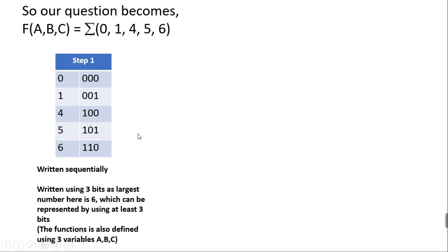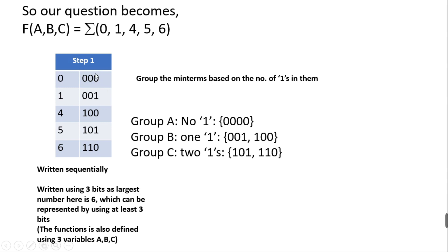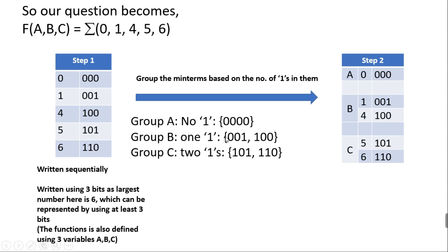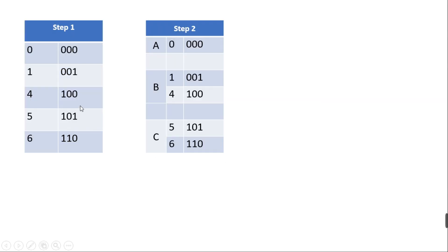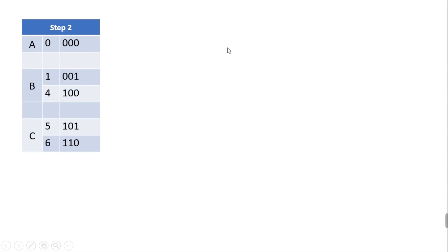After that, I want to group the binary numbers based upon the number of ones in them. There will be three groups: the first group has no ones, the second group has a single one, and the third group has two ones. This is Step 2, and you can see all three groups laid out here.